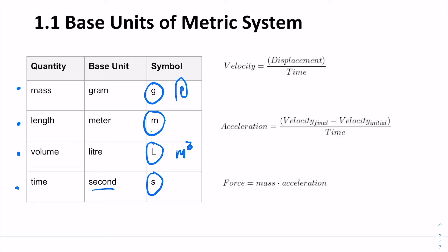With these four base quantities, we are going to find the units of more complex concepts in physics. We talked about velocity recently — velocity is displacement over time. Displacement is a unit of length, and units of length are in meters. So the unit of velocity, because it's length over time, should be in some form of meters over seconds. Units of velocity must be in the form of meters per second — our equation tells us that.